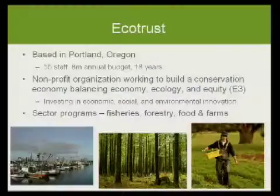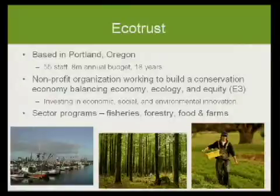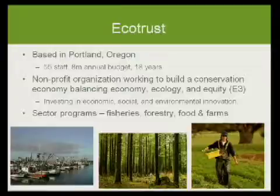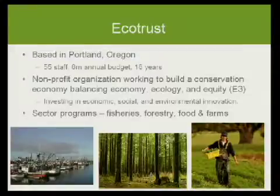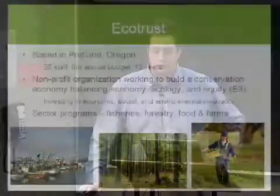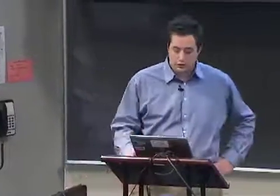Ecotrust is based in Portland, Oregon. We have a staff of 55, a budget of $8 million a year, and we've been in existence for 18 years. We have a sister organization, Ecotrust Canada, that we work with closely on certain initiatives. We both share pretty much the same philosophy around building a conservation economy — addressing ecosystems, ecology, equity, and economic issues in all the work that we do. Our current mission is investing in economic, social, and environmental innovation, and we do this through sector programs: fisheries, forestry, and food and farms.